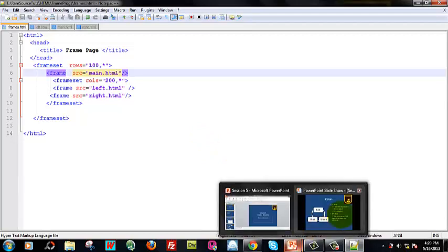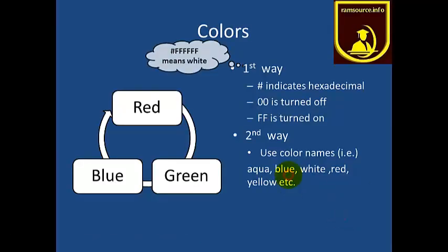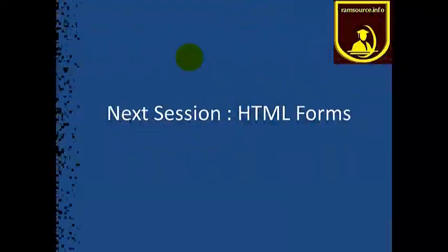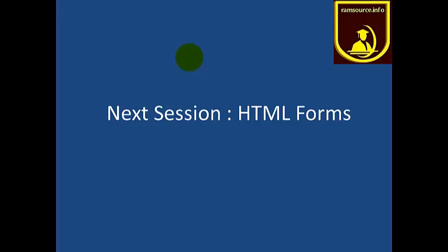Moving out of the slides: if RGB values are all FF, the color is white; if all are 0, it is black. Colors like aqua and yellow are available. I hope you understood this. We have come to the end of the session. In the next session, we will talk about HTML Forms. If you have any doubts, please mail me. Thank you, thanks a lot.